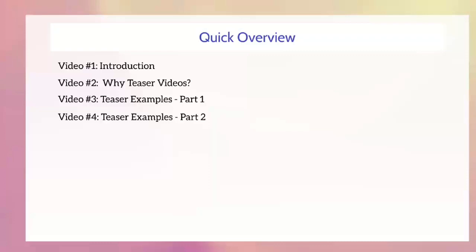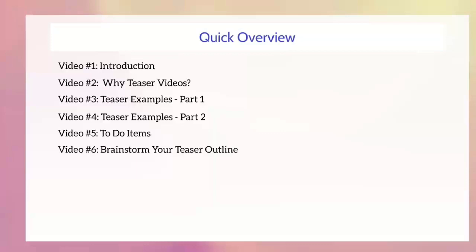Video five covers the to-do items you need to accomplish before moving on. Video six covers how to brainstorm your teaser outline based on what you've learned. Video seven takes the brainstorm — a bunch of ideas — and organizes them into your teaser outline, which is crucial to have before you create the video. Believe it or not, creating a video is actually very easy — it's only about five to ten percent of the whole process. The big part is getting the idea and creating the outline.